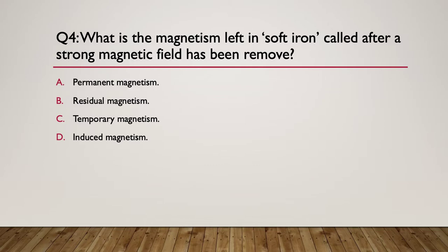The options are: A — permanent magnetism; B — residual magnetism; C — temporary magnetism; or D — induced magnetism. Pause here. Here's your hint: list all the different magnetic effects and consider which one would apply here. The correct answer is residual magnetism. Temporary magnetism means it's magnetized while the field is there but none is left over when you remove it. Induced magnetism relates to permanent magnetism. So we call it residual magnetism.